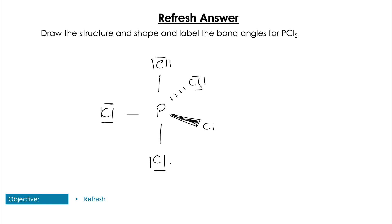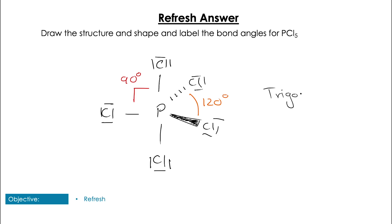Now when we have five electron domains, of course we're going to have the trigonal bipyramidal shape, which has an angle of 120° around the equatorial bonds and an angle of 90° between the axial and the equatorial.